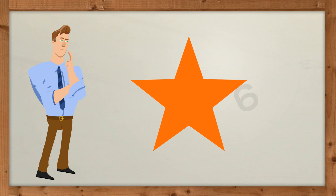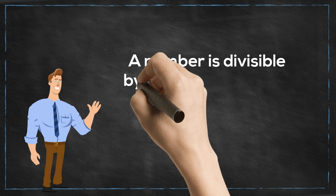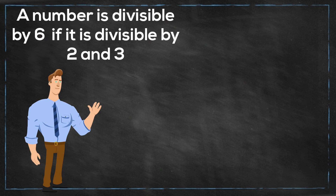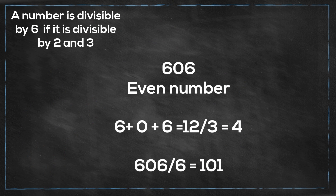Next we have 6. A number is divisible by 6 if it is divisible by both 2 and 3. Let's look at 606. First, it ends in an even number, so it is divisible by 2. Adding the digits: 6 plus 0 plus 6 equals 12, and 12 is divisible by 3. Therefore 606 is divisible by 6.